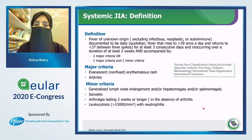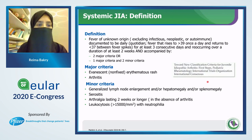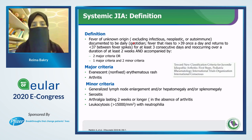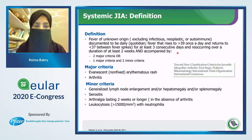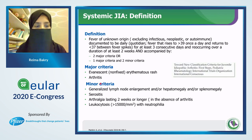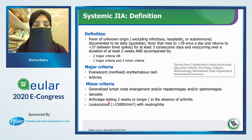Up to now there are many studies toward new classification criteria for juvenile idiopathic arthritis. We have the definition of systemic JIA that includes fever of unknown origin, excluding infections, neoplastic or autoimmune disease, documented to be daily quotidian fever rising to more than 39 degrees once a day and returning to normal between spikes for three consecutive days over a duration of at least two weeks, accompanied by two major criteria or one major and two minor. Major criteria: arthritis and evanescent non-fixed erythematous rash. Minor criteria: generalized lymphadenopathy, hepatomegaly, splenomegaly, serositis, arthralgia in the absence of arthritis, and leukocytosis with predominant neutrophils.